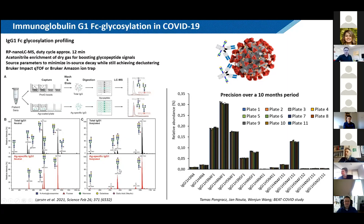Here's another example of a glycoform which is low in total IgG but quite enriched in these antigen-specific antibodies. In terms of the precision of our method, we are rather happy: if we do a relative quantification of the various glycoforms, both for total and antigen-specific, our method is performing stably over 10 months without noticeable variation.